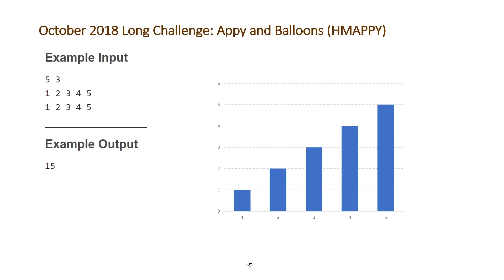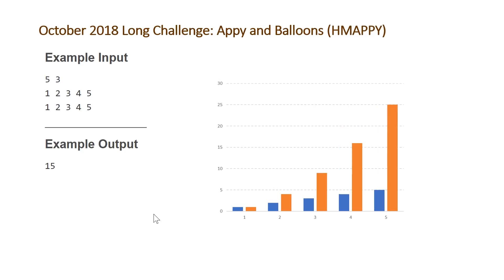Visualizing this: on each of the five days Appy wants 1, 2, 3, 4, and 5 balloons respectively. If we assume m equals zero — no balloons at all and we pay entirely in candies — on day one we pay 1 candy, day two costs 4 candies (2 per balloon times 2 balloons), day three is 9, day four is 16, and day five is 25 candies. This shows what the full candy cost looks like as orange bars on each day.